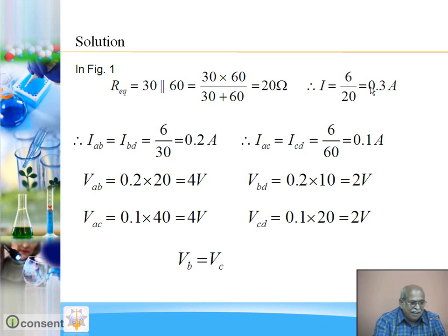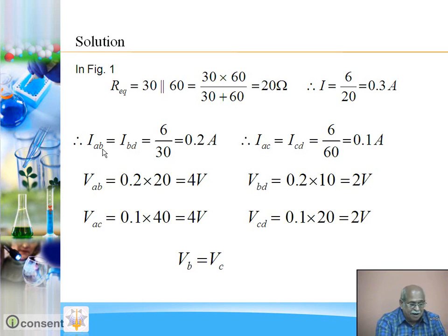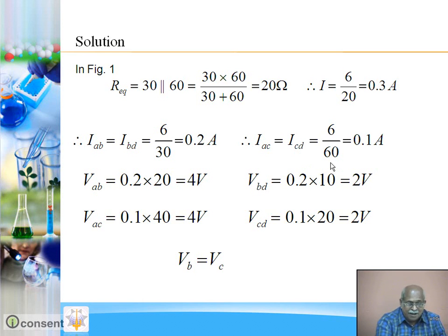Now, what will be the current in branch ABD? The potential difference is 6V and resistance is 30 ohm, so current is 6 divided by 30, which is 0.2 ampere. Current from A to C or from C to D will be potential difference 6 divided by resistance 60, so current is 0.1 ampere.